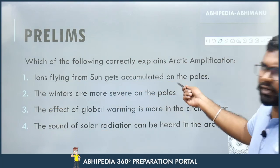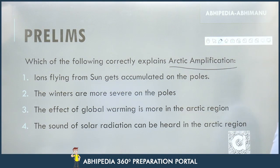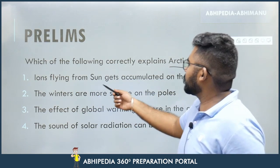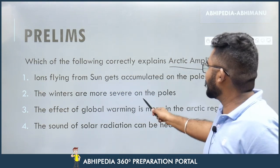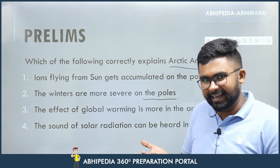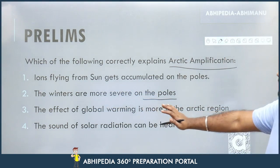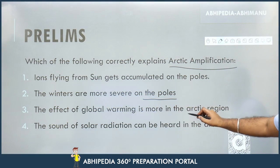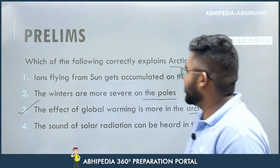Let's look at a direct practice question: 'Which of the following correctly explains Arctic Amplification?' Options: (1) Ions from the sun get accumulated at the poles; (2) Winters are more severe at the poles; (3) The effect of global warming is more in the Arctic region; (4) The sound of solar radiation can be heard in the Arctic region. The correct answer is option 3.